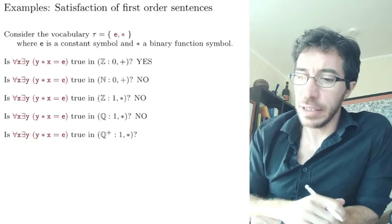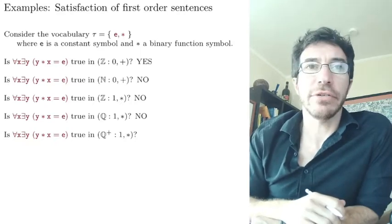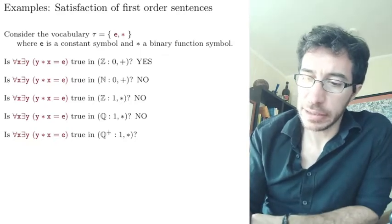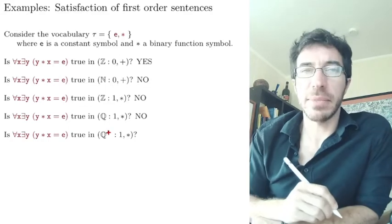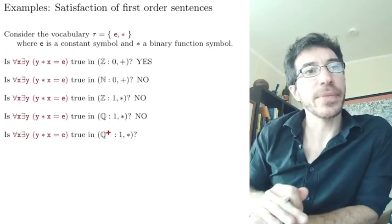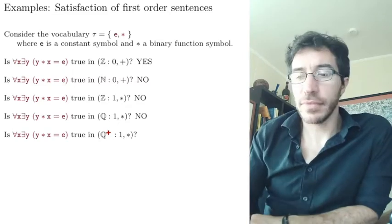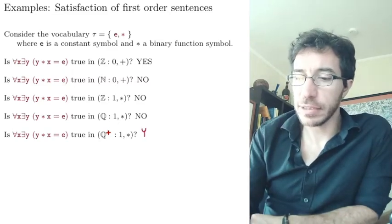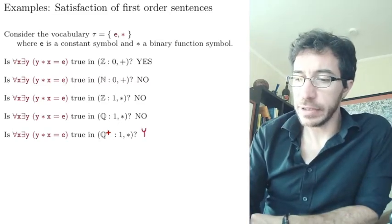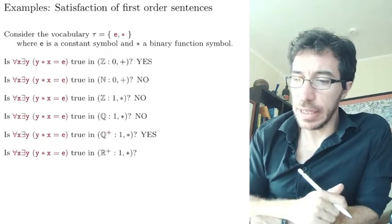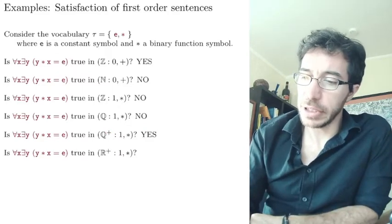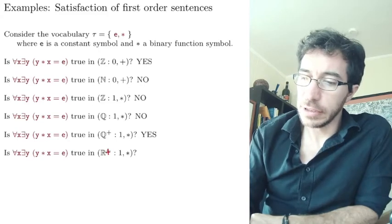So what about if we take the positive rational number? So here, the plus here, I mean positive rational numbers. Then yes, then every number has an inverse. So this is true. For every x, you can take y to be the inverse. What about on the reals? Yes, same thing. Every number in the positive reals, positive reals, yes.